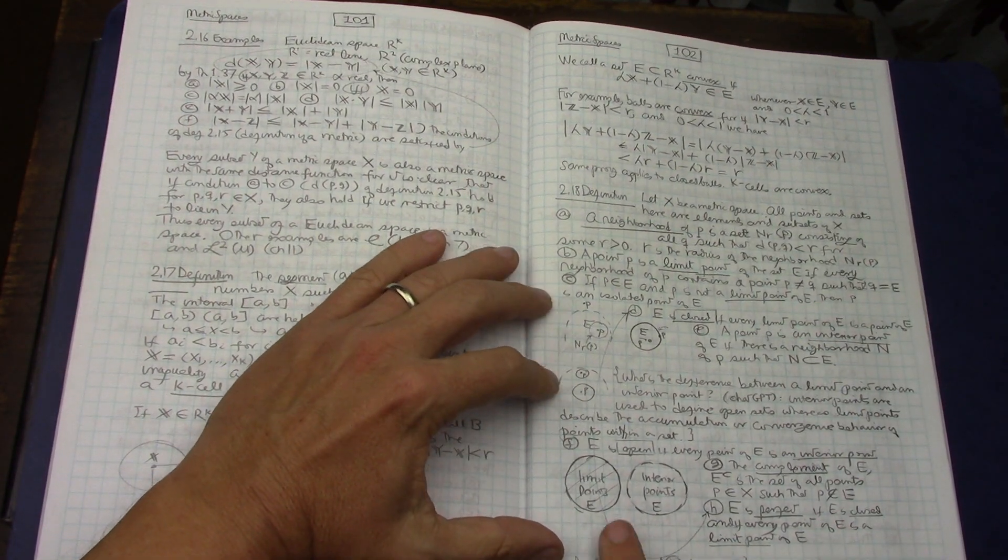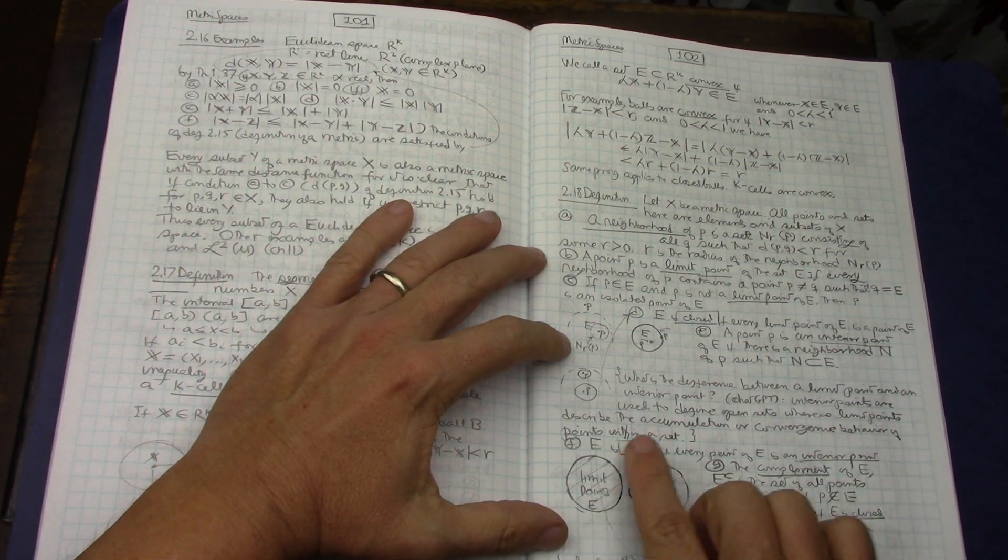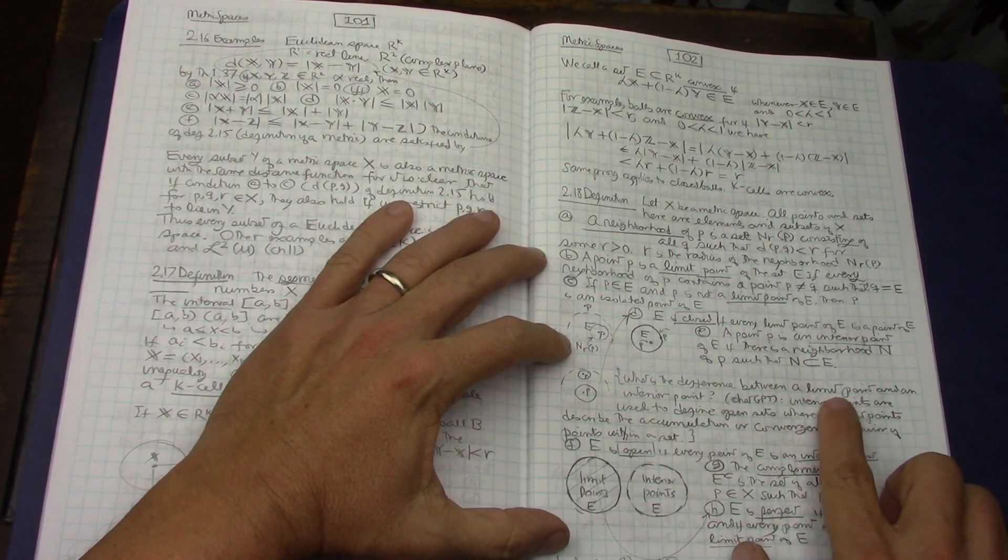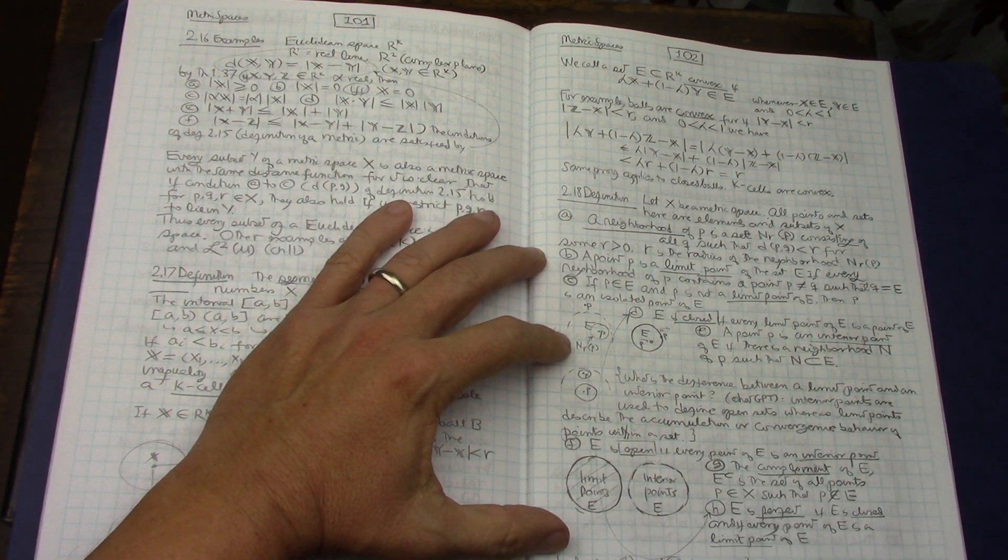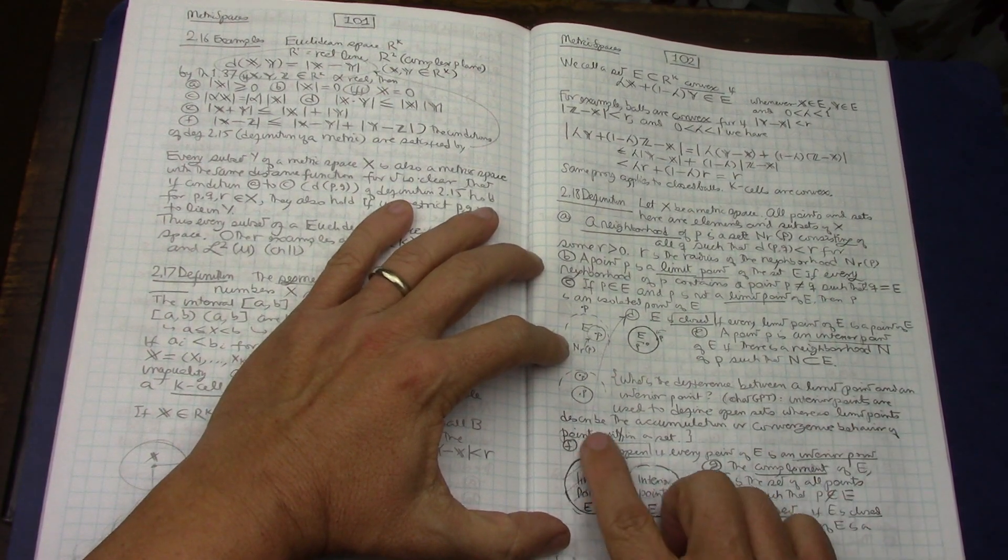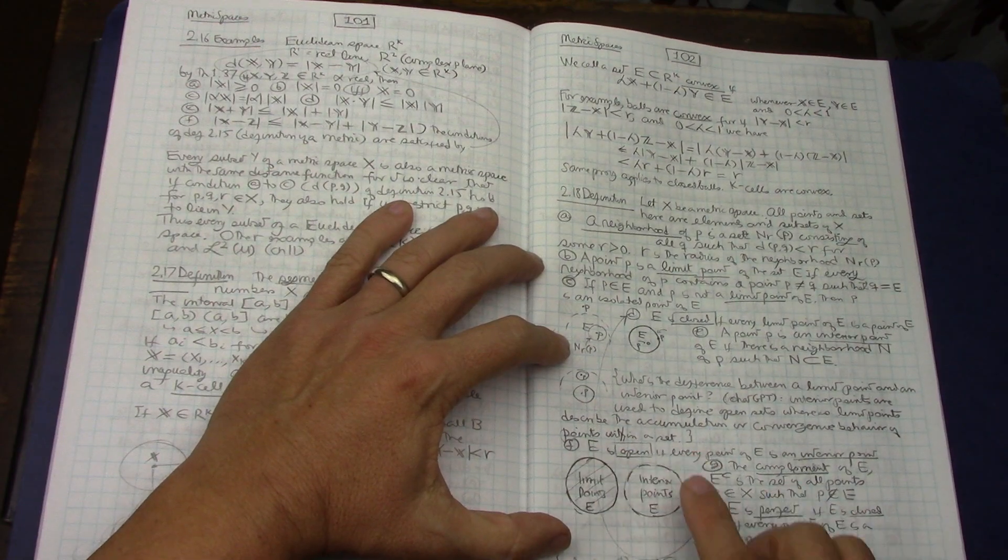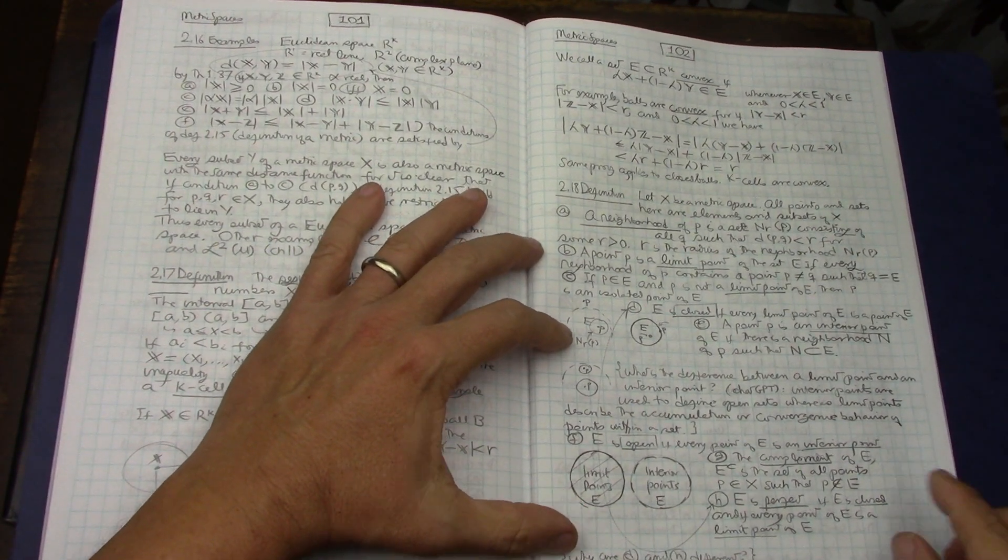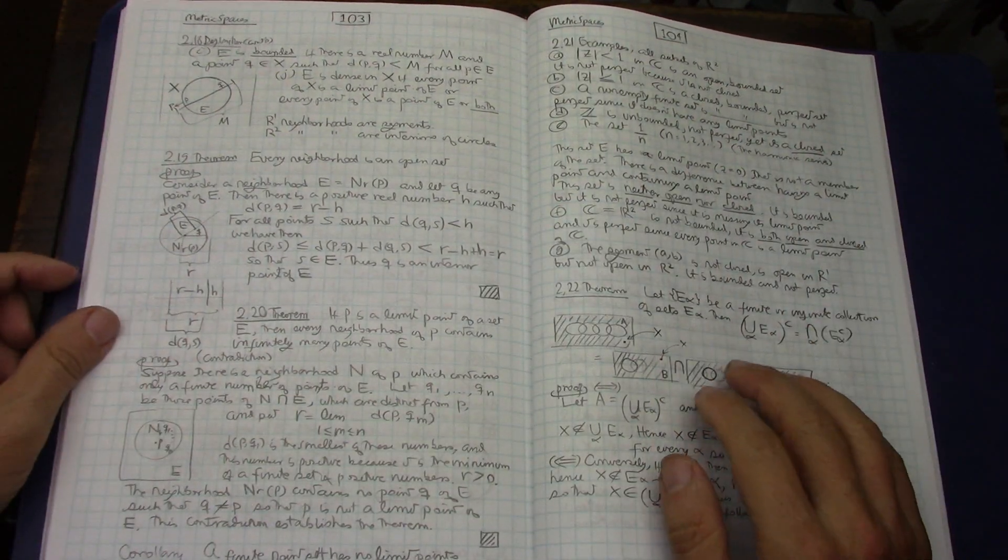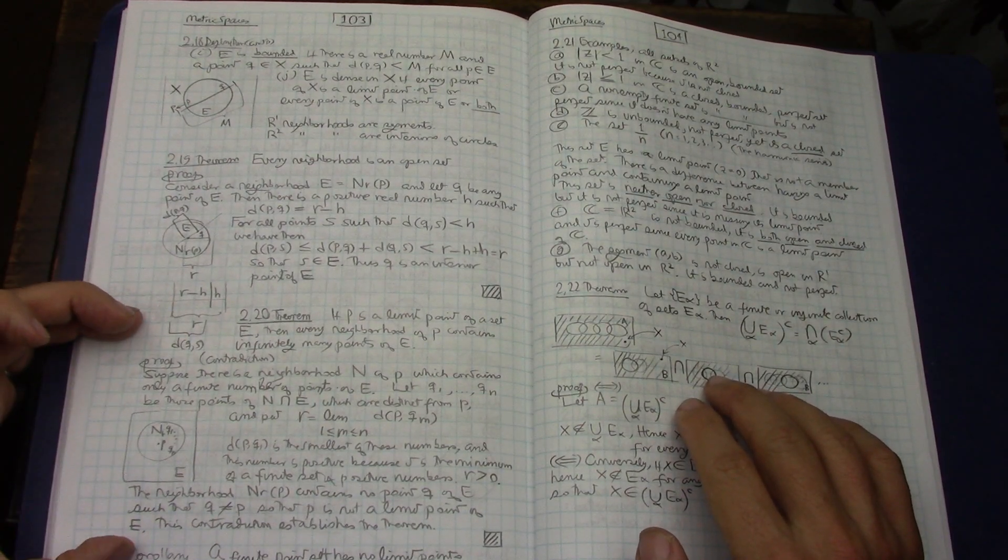Even though I know that this is really all this is doing is plotting a convex curve. Then running through all the definitions in point set topology. At one point I actually went into ChatGPT and asked what's the difference between a limit point and an interior point. So yes, interior points are used to define open sets whereas limit points describe the accumulation or convergence behavior of points within a set.